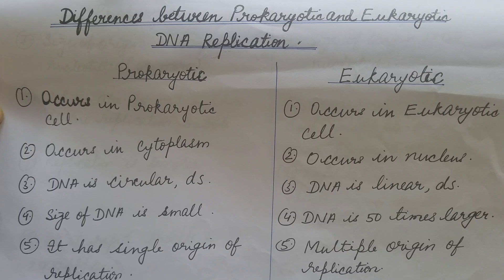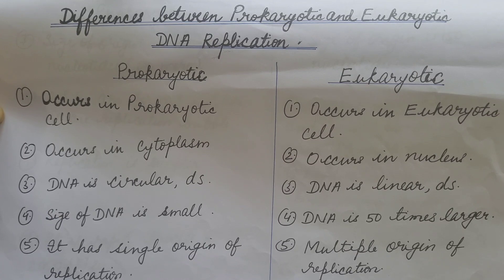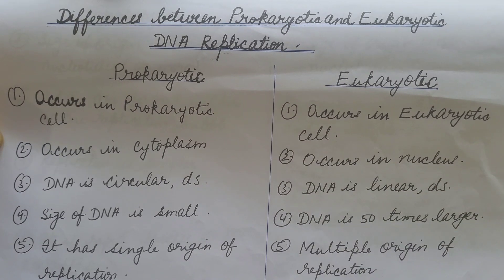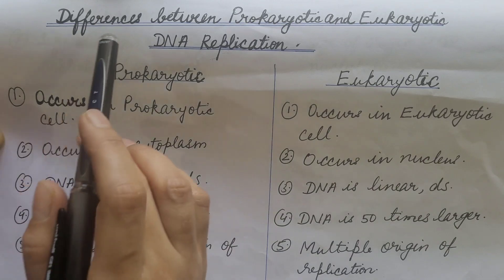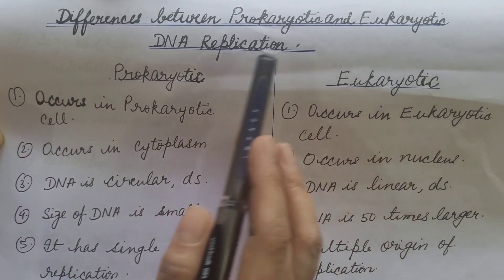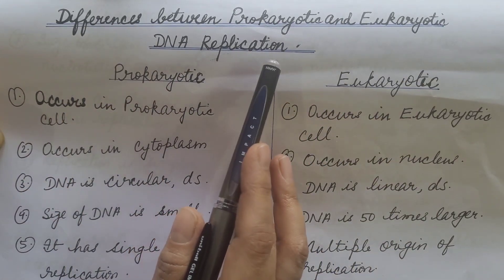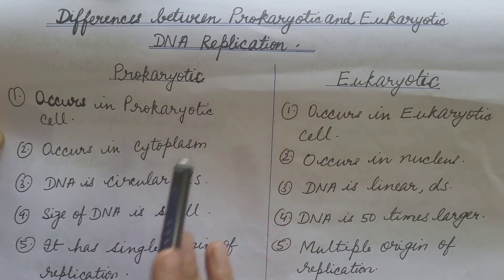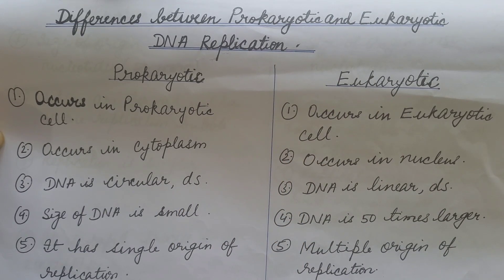Hello friends. In the last video we discussed about enzymes and proteins involved in prokaryotic and eukaryotic DNA replication — that was a comparative study. Then we discussed about certain similarities of eukaryotic and prokaryotic DNA replication. In this video we are going to discuss about differences between prokaryotic and eukaryotic DNA replication. So let us see them one by one.